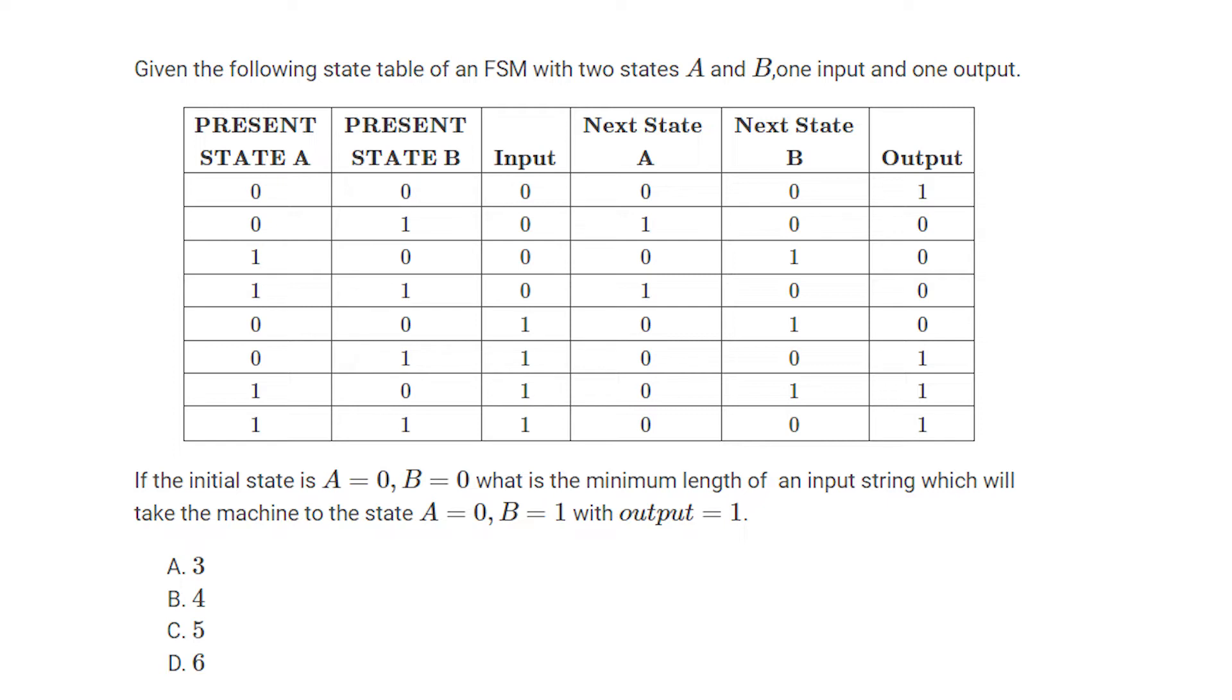Given the following state table of an FSM with two states A and B, one input and one output, if the initial state is A=0, B=0, what is the minimum length of an input string which will take the machine to state A=0, B=1, with output=1.